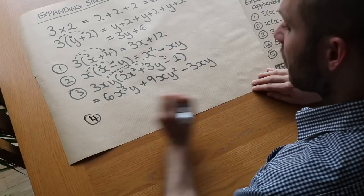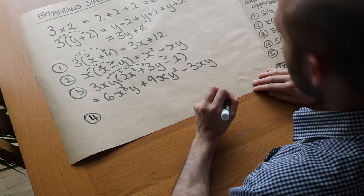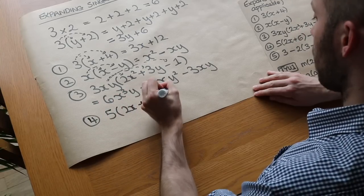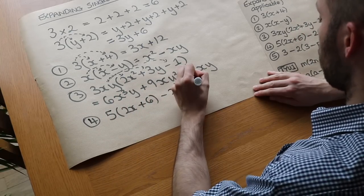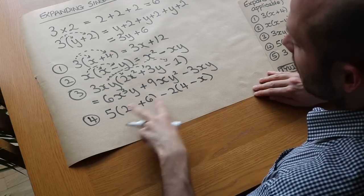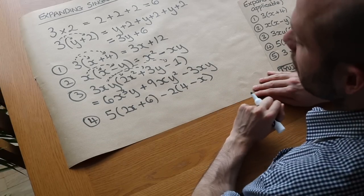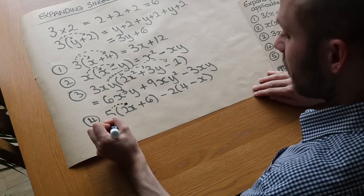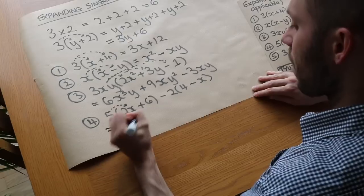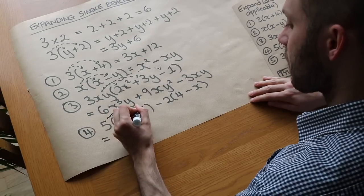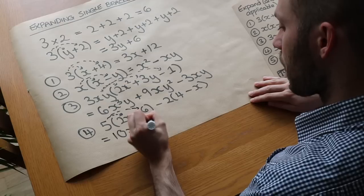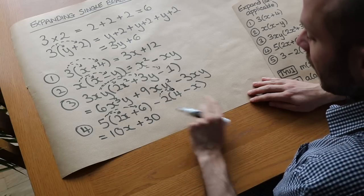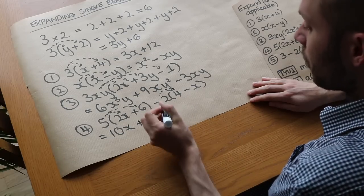Now in this fourth one, we're going to have some like terms which we're going to be able to collect together. So we have 5, 2x, plus 6, minus 2 lots of 4 minus x. And all you need to do is expand each of these things separately before you collect like terms. So we've got 5 times 2x, that is 10x. We've got 5 times 6, which is 30. And we separately expand out this. We've got minus 2 times 4. Don't forget that minus there. Minus 2 times 4 is minus 8.